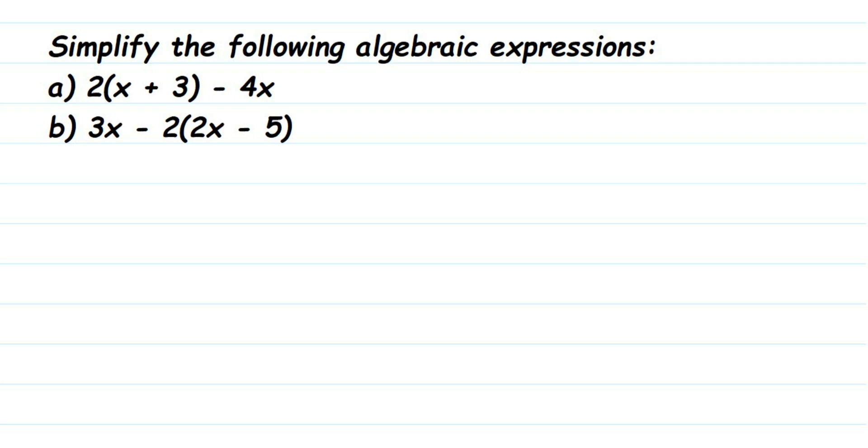Hey everyone, here's a question: simplify the following algebraic expressions. We have to simplify 2(x + 3) - 4x. Simplify means we have to reduce it into the lowest form.